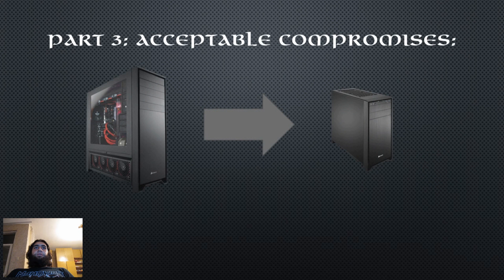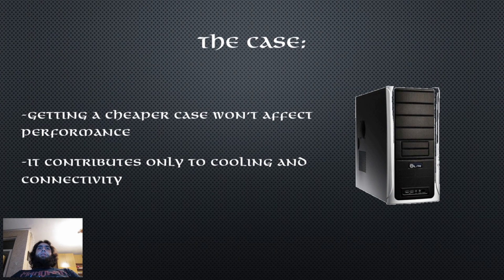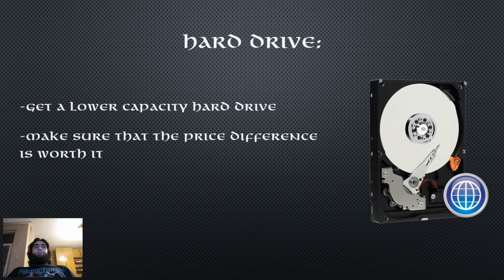So we have reached the final section of this tutorial — the acceptable compromises. In this part I will show you in what order to scale down your components in order to reduce the overall price of the rig or redirect saved money to a specific component. First up on the chopping block is the case — getting a cheaper case will not affect performance, since it contributes only to cooling and connectivity. Second up is the hard drive — you can cut capacity to save money, but considering the difference between a 500GB and 1TB drive is only $4, I don't recommend doing this unless the price difference is greater.